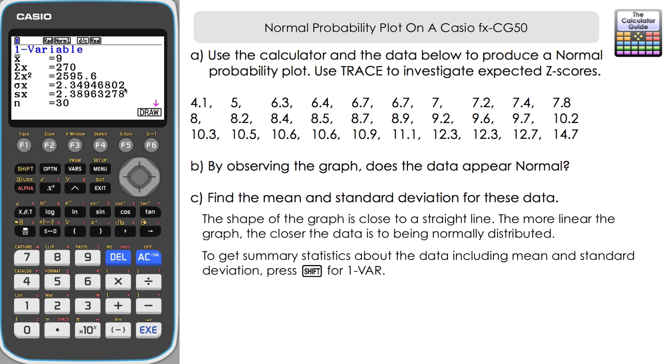So there we go how you can produce a normal probability plot on a Casio FX-CG50. There's a few other ways that you can explore around the plot once you've got that drawn. I'll leave that up to you to have a little look and experiment around depending on what data you've got to input into the calculator.